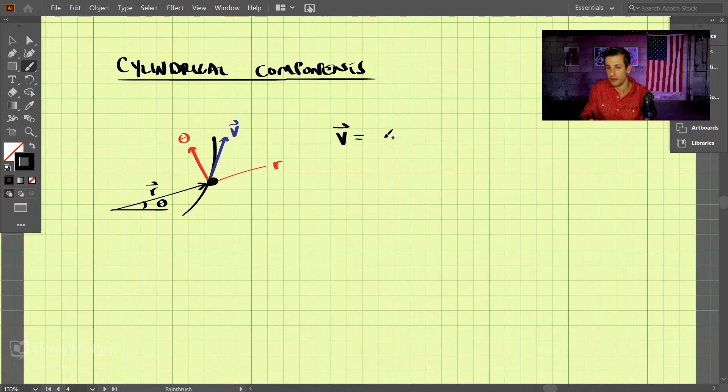So we have the velocity in the radial component times the unit vector in the radial component plus the velocity in the transverse direction times the unit vector in the transverse direction.